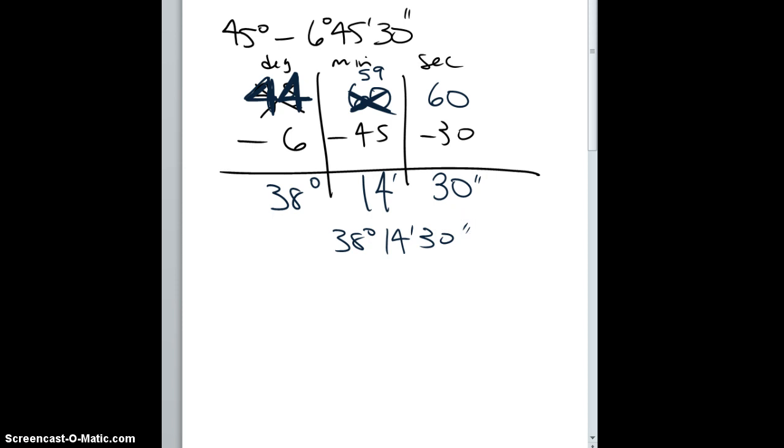Another example we didn't have time to do in class was with division. If we look at division here, I have 21 degrees, 27 minutes, and 36 seconds divided by 2. Obviously, kind of like a polynomial, you can divide all these by 2. If you have something like 2x² + 4x + 8 divided by 2, you can divide each part by 2.